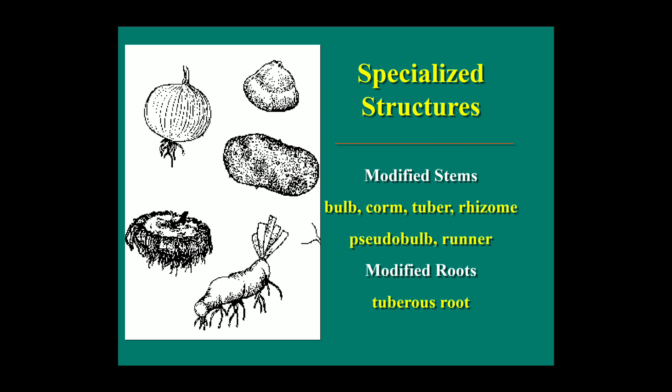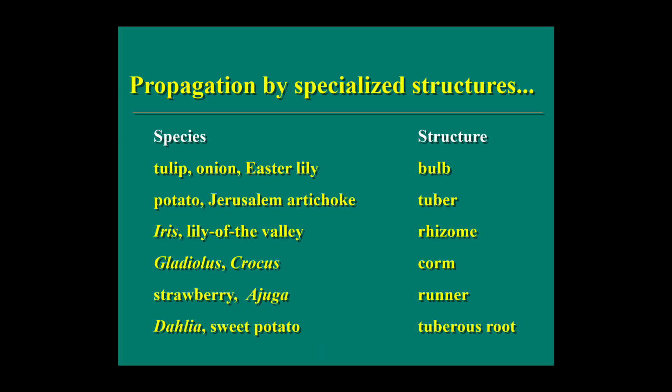Modified roots include tuberous roots. Examples by structure: Bulbs — tulip, onion, Easter lily; Tubers — potato, Jerusalem artichoke; Rhizomes — iris, lily of the valley; Corms — gladiolus, crocus; Runners — strawberry, ajuga; Tuberous roots — dahlia, sweet potato. These are the species that grow by the following specialized structures.